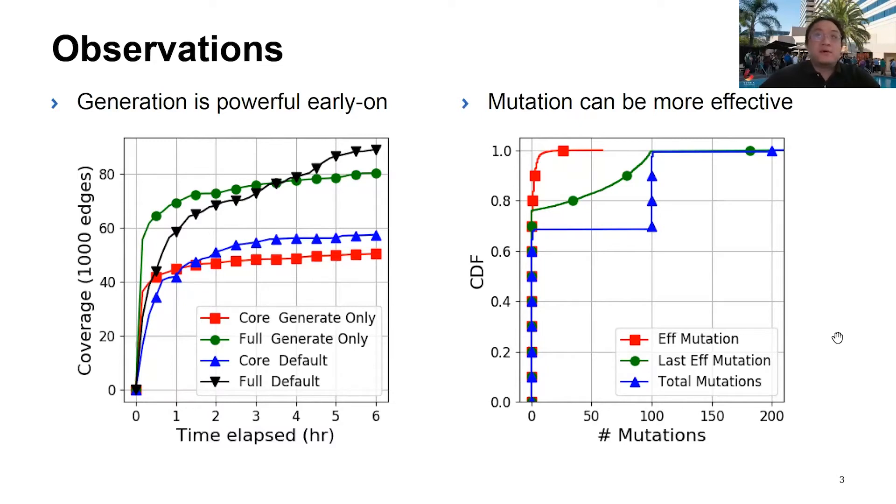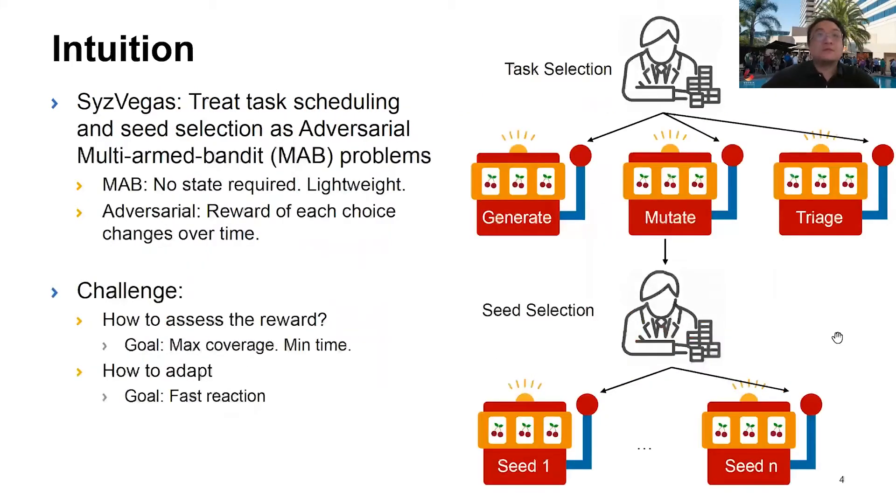Another example is that whenever Syzkaller finds a new seed, it will force 100 mutations out of it. This creates a huge backlog for seed programs waiting for others to finish their 100 mutations. Not all seeds are good enough for 100 mutations as well. Based on our observations so far, the best strategies evolve over time and static ad hoc decisions can be harmful.